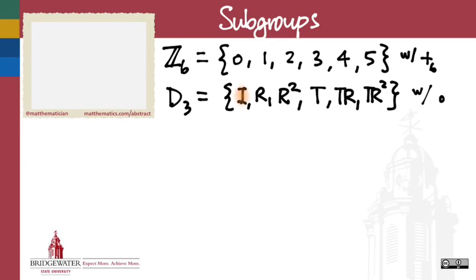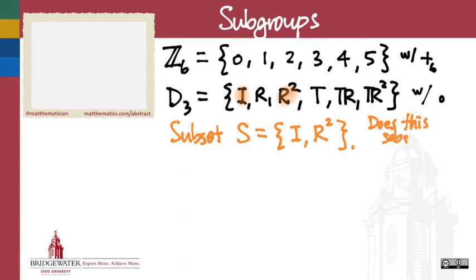Let's just go to D3 for a minute. And I want to ask the question, if I were to take just two out of my six elements, let's say I just take the subset. So I want to be real careful here to say, the subset, I'm going to call it S, which has just the elements I and R squared. So I just pick those two elements out of my six. And the question I have is, does this subset of elements form a group of its own? Is it a group? What do you think?